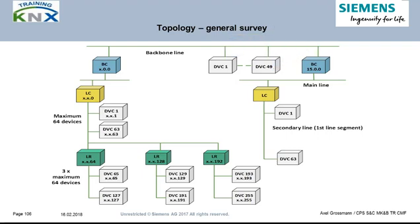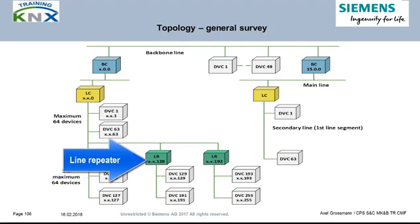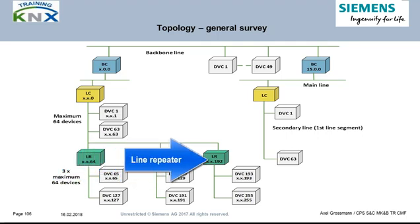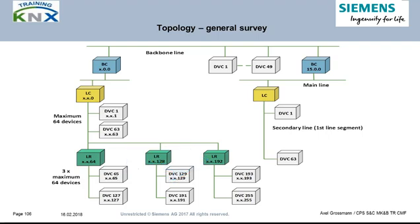All area couplers are linked with each other via the backbone or area line. If no other solutions upwards or parallel are possible, lines can also be extended downwards. For this extension, a so-called line repeater is required. Three line repeaters per line are permitted, connecting the same number of line segments to the first one. Addressing, device number limitations, and the disadvantages of line repeaters will be explained on the following pages.